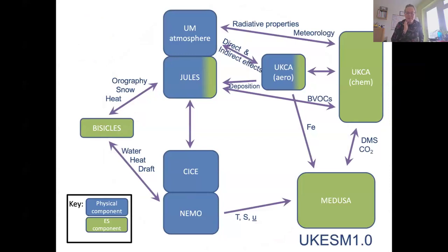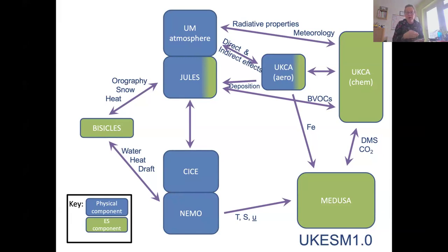The current UK Earth system model capability: this schematic shows the different component models included in UK ESM 1.0. The boxes shown in blue represent what might be included in a physical model. Within UKCA, aerosol is included in the physical model so that aerosols can offset greenhouse gas warming. The physical climate model is made up of the atmosphere, the land surface model JULES, the aerosol component of UKCA, the ocean model NEMO, and the sea ice model CICE.